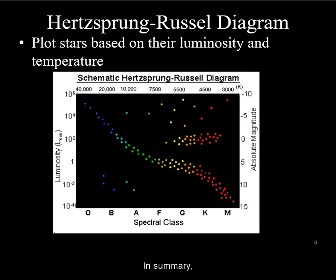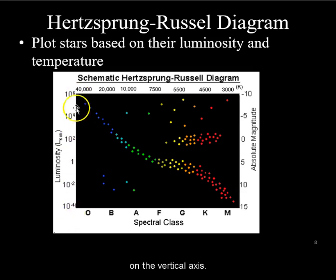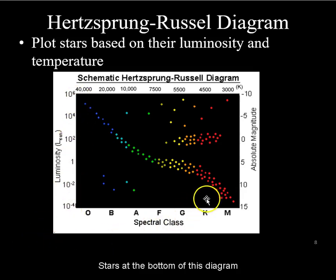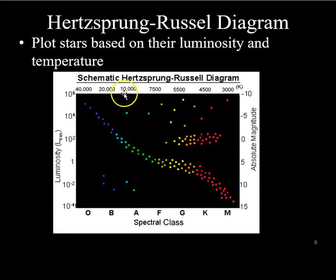Luminosity, the total power output of a star, is on the vertical axis. Stars at the bottom of this diagram are faint, and stars at the top of the diagram are very luminous.